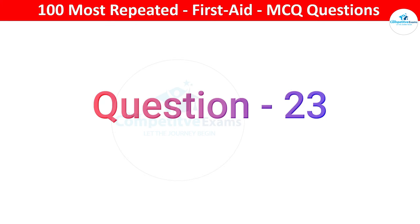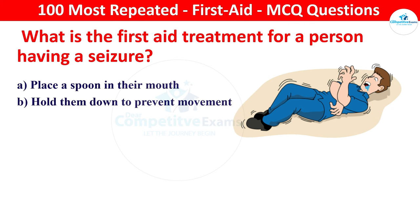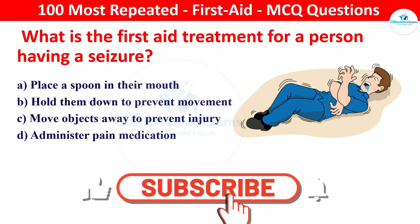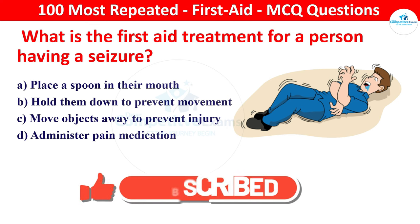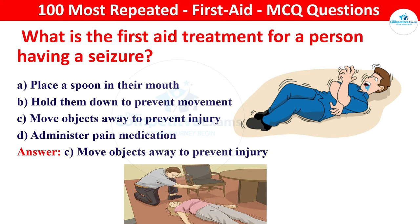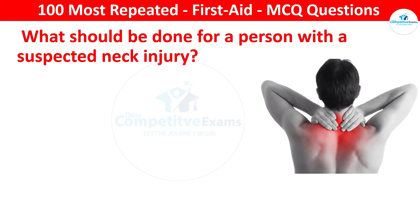Next question: what is the first aid treatment for a person having a seizure? Options: place a spoon in their mouth, hold them down to prevent movement, move objects away to prevent injury, or administer pain medication. The right answer is move the objects away to prevent injury. Creating a safe space during a seizure helps to prevent injury to the person.